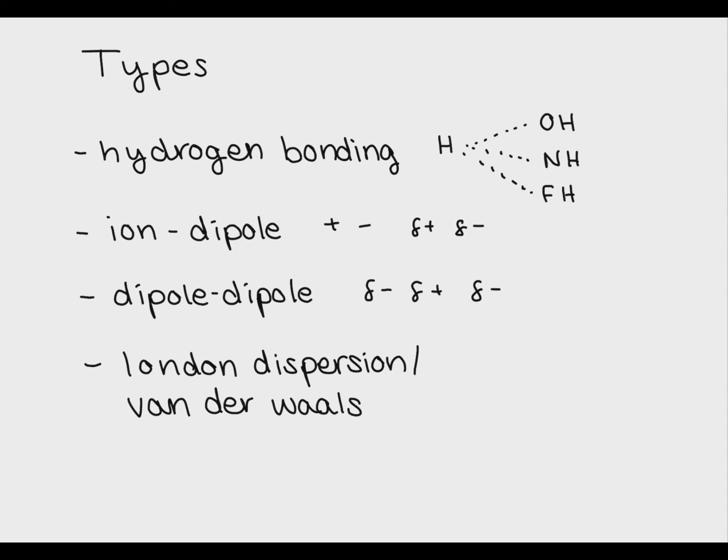Dipole-dipole interactions occur between two covalently bonded molecules. Covalently bonded molecules experience dipole moments where they create a partially negative and a partially positive charge. The dipole-dipole interaction is when one partial positive of a compound is attracted to the partial negative of the other compound.